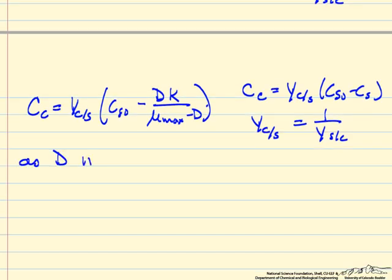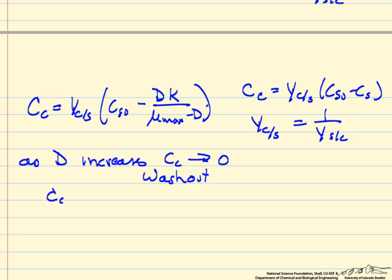As D increases, eventually at high enough D values CC will go to zero. This is washout. Washout occurs when CC equals zero, giving us a relation for the washout dilution rate in terms of the constants umax and KS.